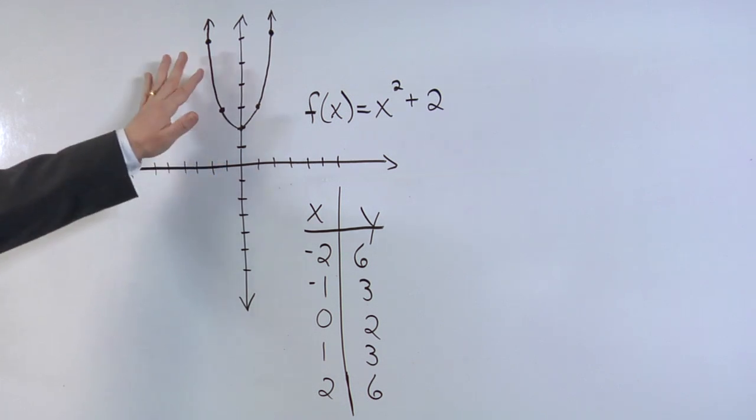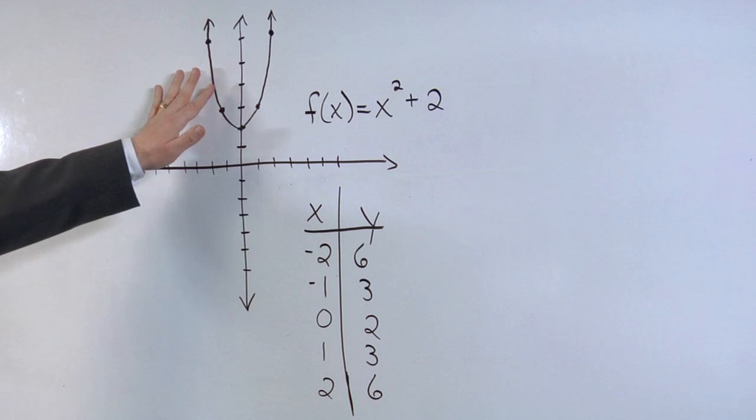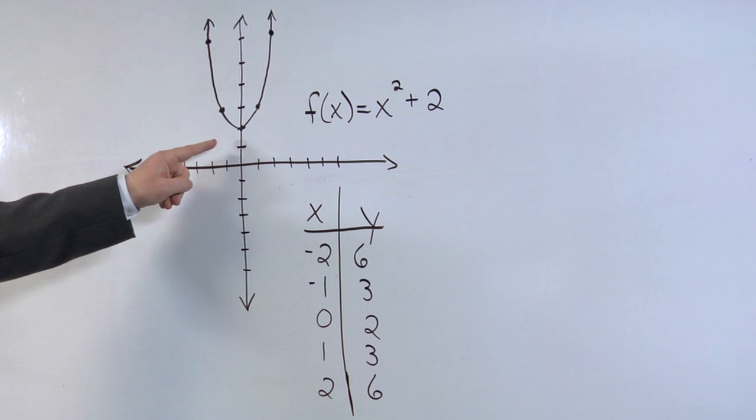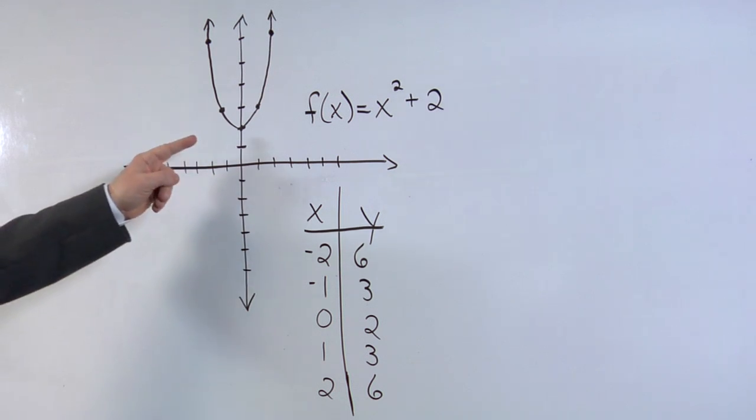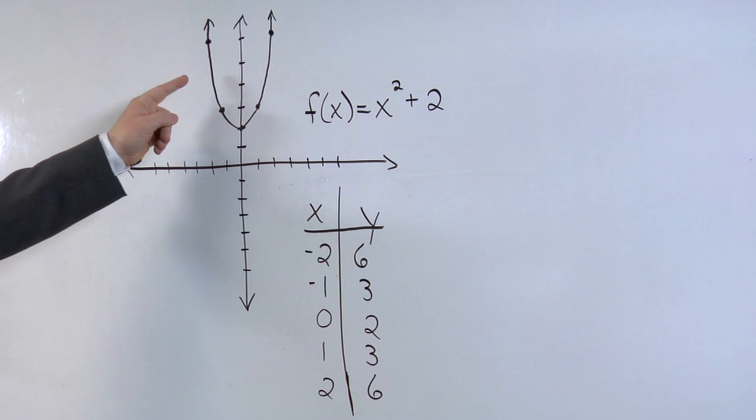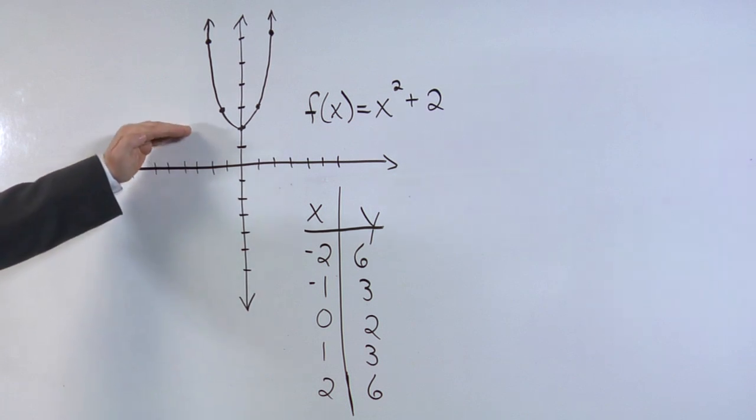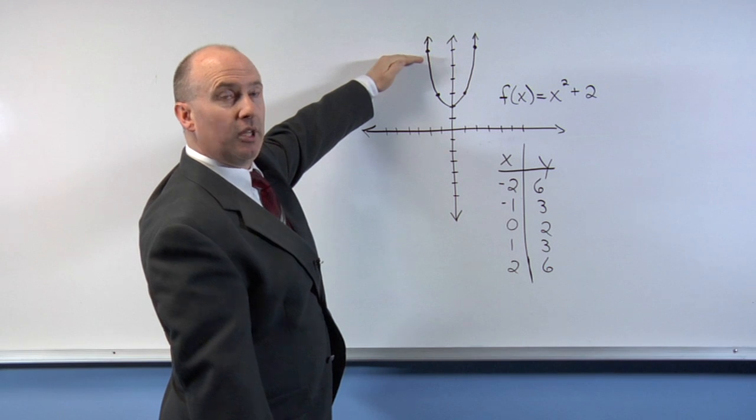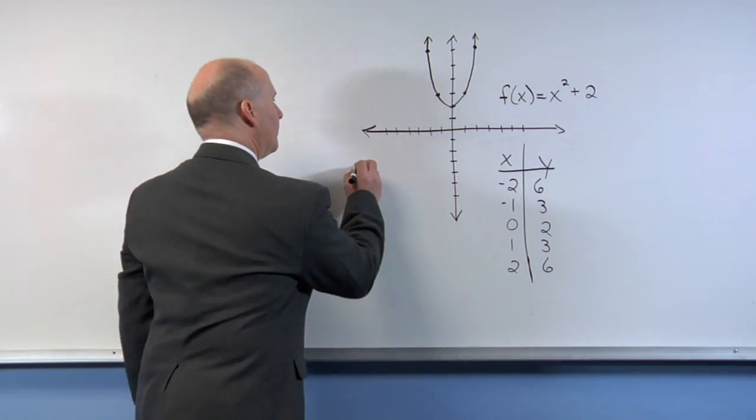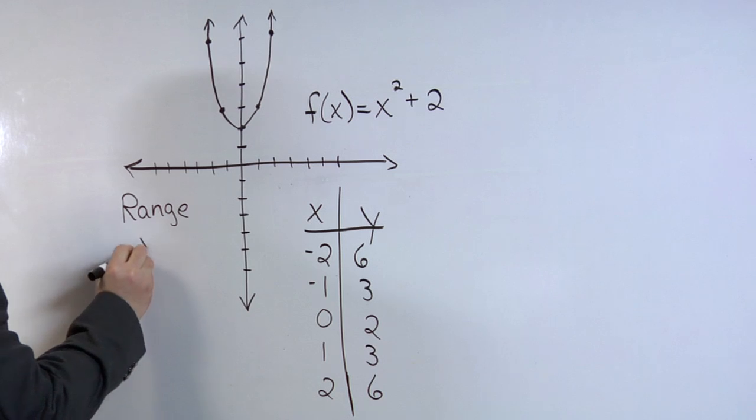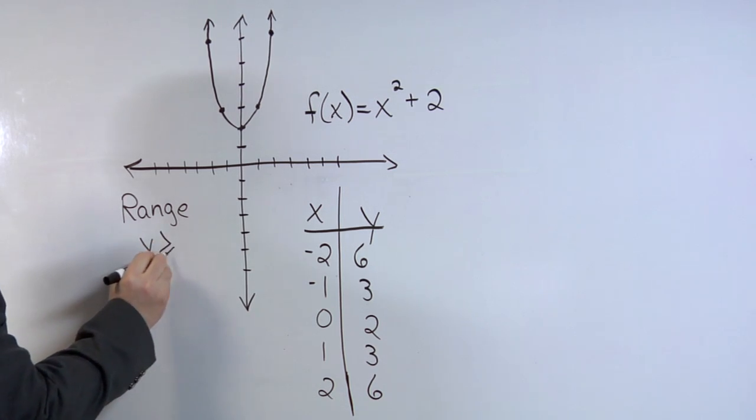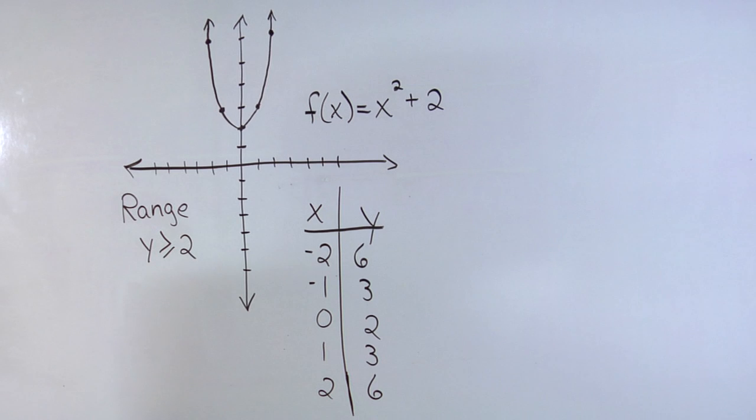So if I take a close look at this graph and I think to myself, what values could y be? Well, there's no values for y that's dropping downward. All of the points for y is upward. So the minimum value for y would be 2 and everything above that value. So what I would say is that the range are all values where y is greater than or equal to 2.